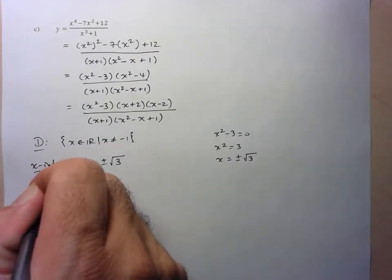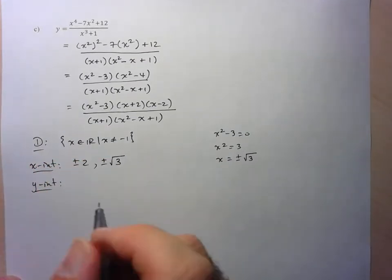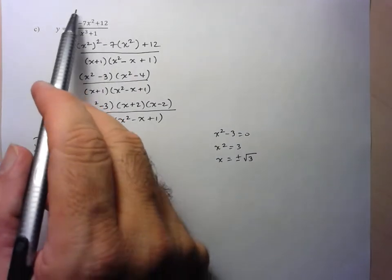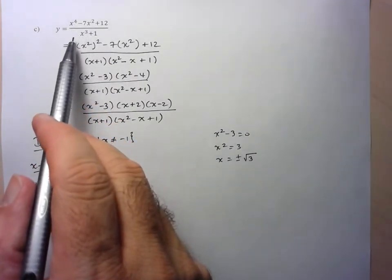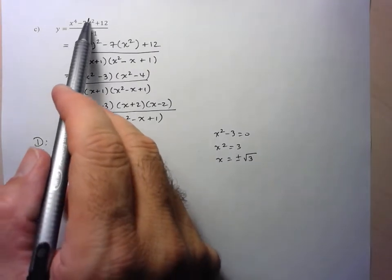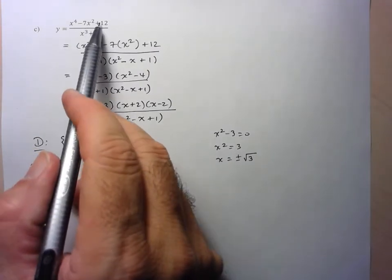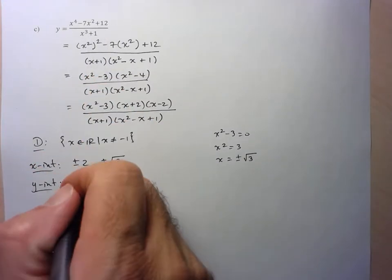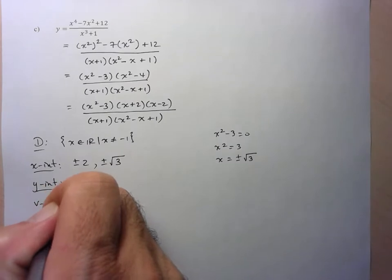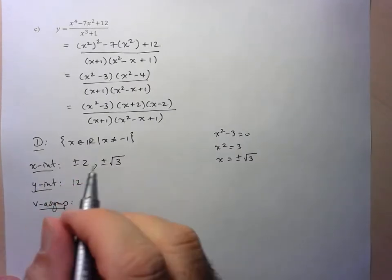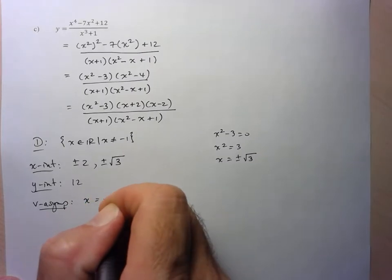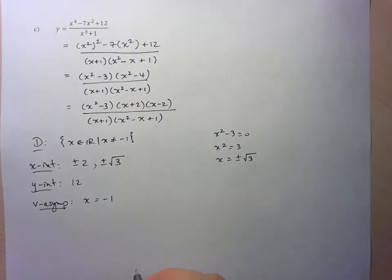For the y-intercept, if we stick in x equals 0, I think it's easier to work with the original function instead of the factored form. Any term with an x disappears, so we're left with 12 over 1 — the y-intercept is 12. For vertical asymptotes, whatever makes the denominator 0 — in this case negative 1 — so x equals negative 1 is the only vertical asymptote.